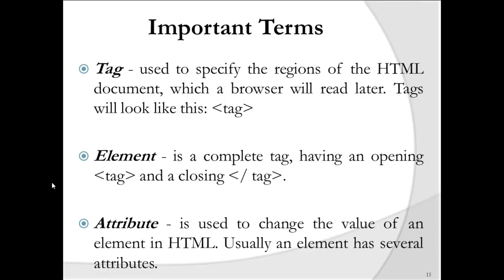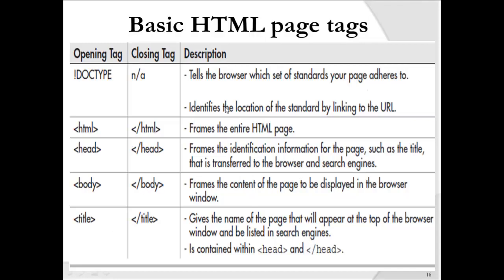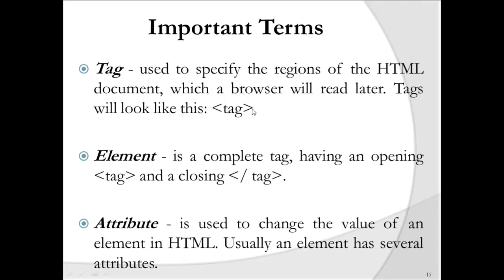Some important terms you have to remember while designing an HTML page. The first is a tag, which is used to specify the regions of the HTML document that the browser will read. Tags start and end with angle brackets, and they tell the browser what to do with the content embedded within the tag.